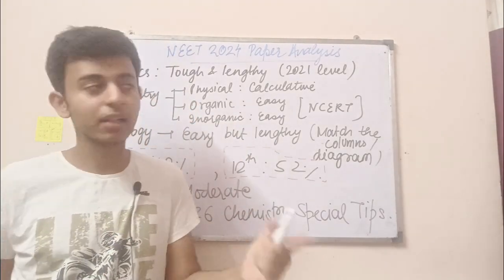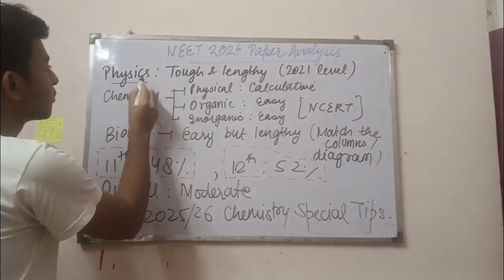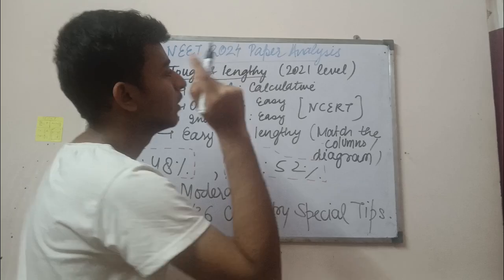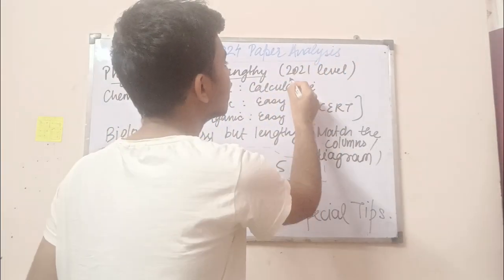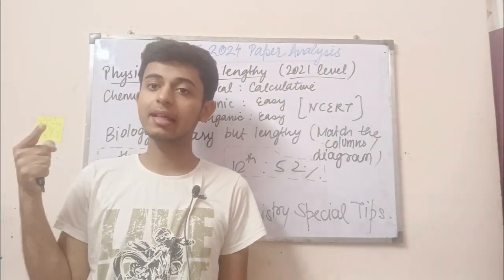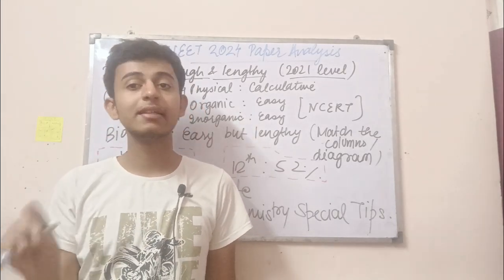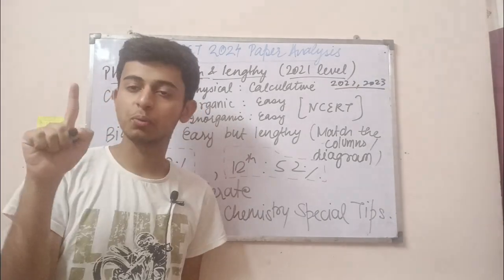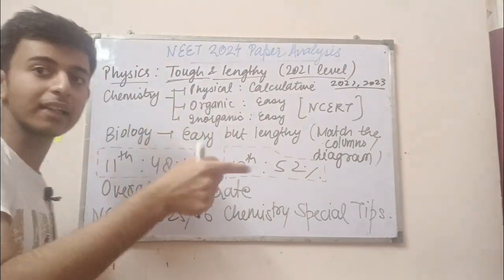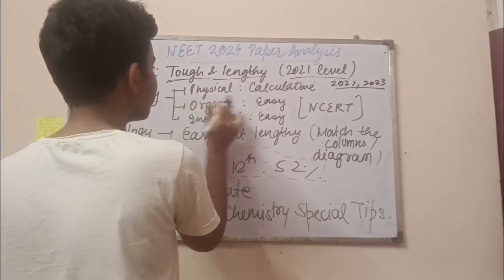Starting with the subject-wise analysis, because that's going to give us a clearer idea. Physics was a little tough as well as lengthy — I can say it was at the 2021 level. In 2022 and 2023, physics was really straightforward and formula-based, but this year it had concepts. There is one difficult subject and the rest are easy, so this year it was physics, like last year it was chemistry.